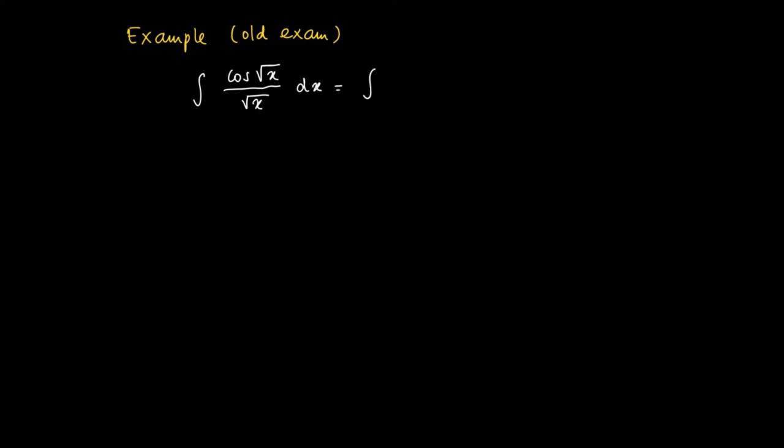So what we will do here is we write it a little bit differently. So this equals the cosine of the square root of x times 2 times 1 over 2 square root of x dx.